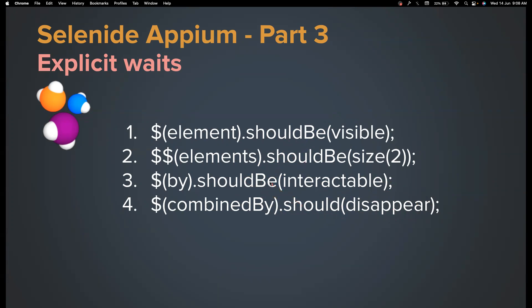If you're comfortable with 'should', you can use 'should'; if you prefer 'should be' or 'should have', you can use those too. My personal preference is to use 'should be' for waiting and 'should have' for assertions. So without wasting more time, let's do that in action.